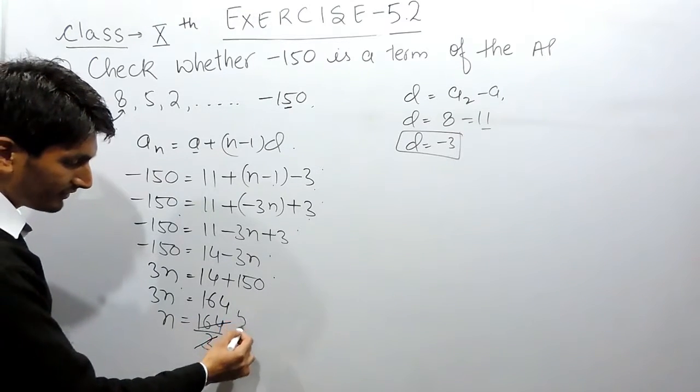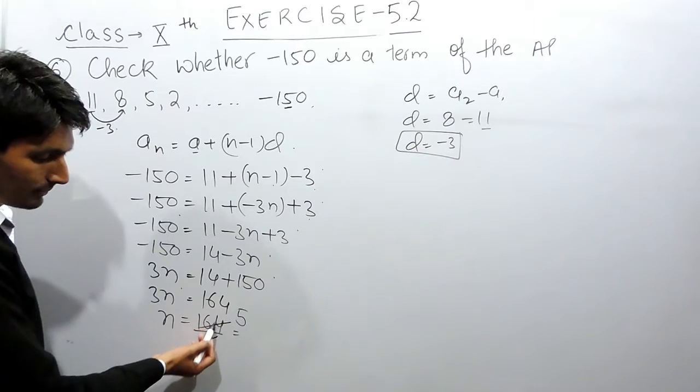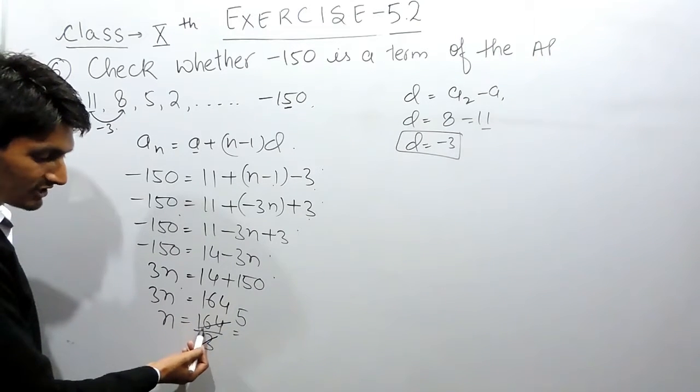Now if I cancel this value, 3 times 5 is 15, and carry 1, so this will become 14, which is not divisible by 3.